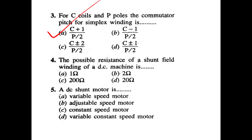Fourth question: The possible resistance of a shunt field winding of a DC machine — this is a variable constant speed motor, an adjustable speed motor. One DC shunt motor.